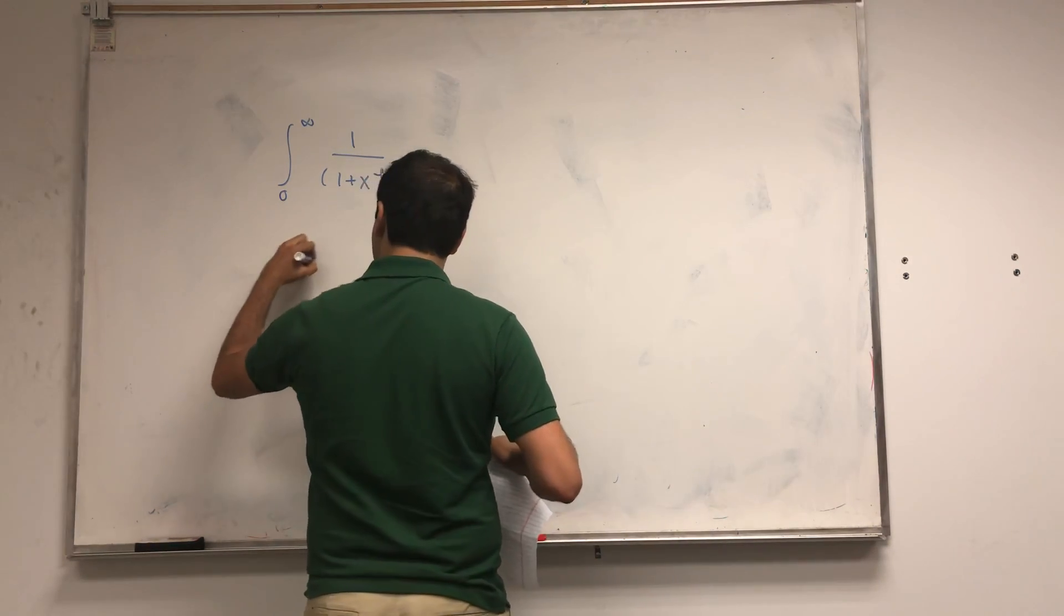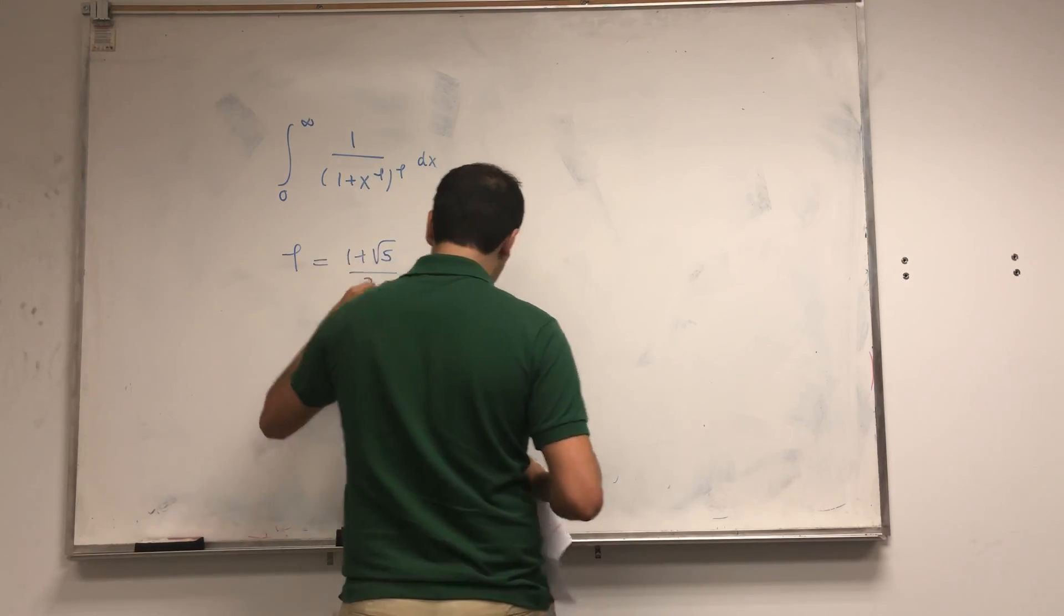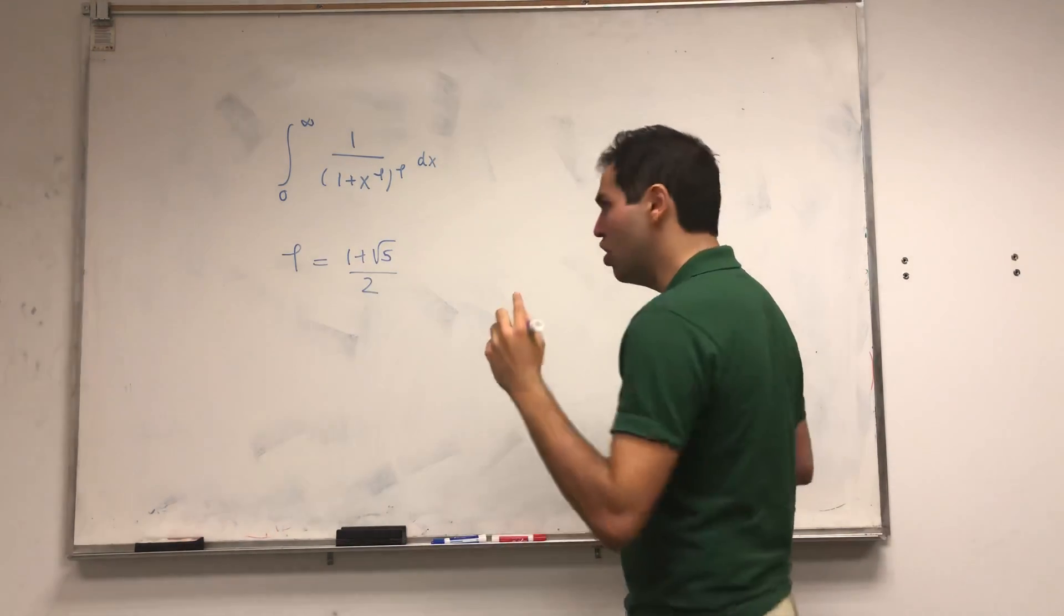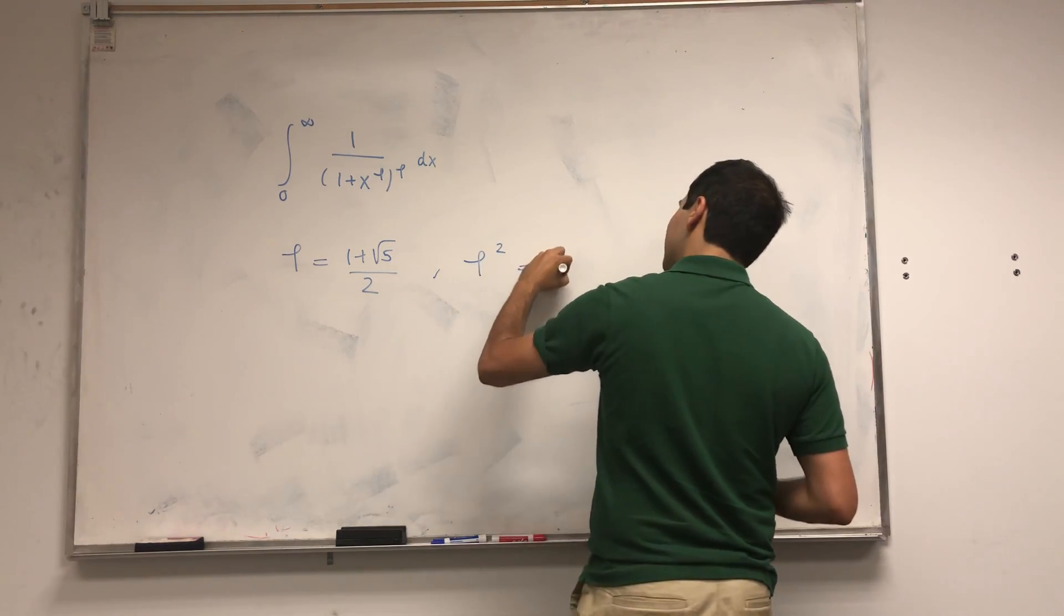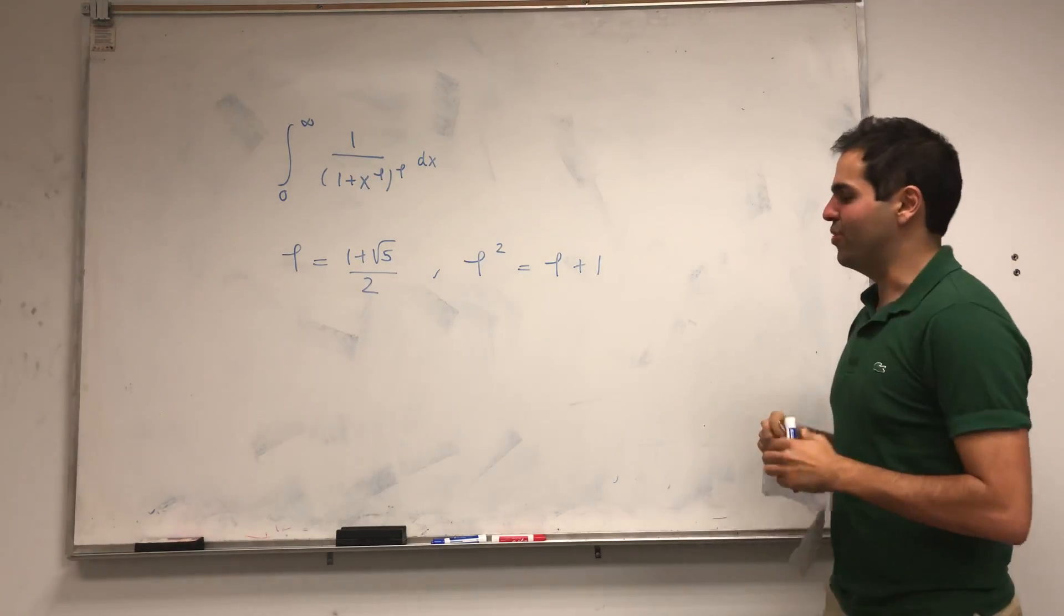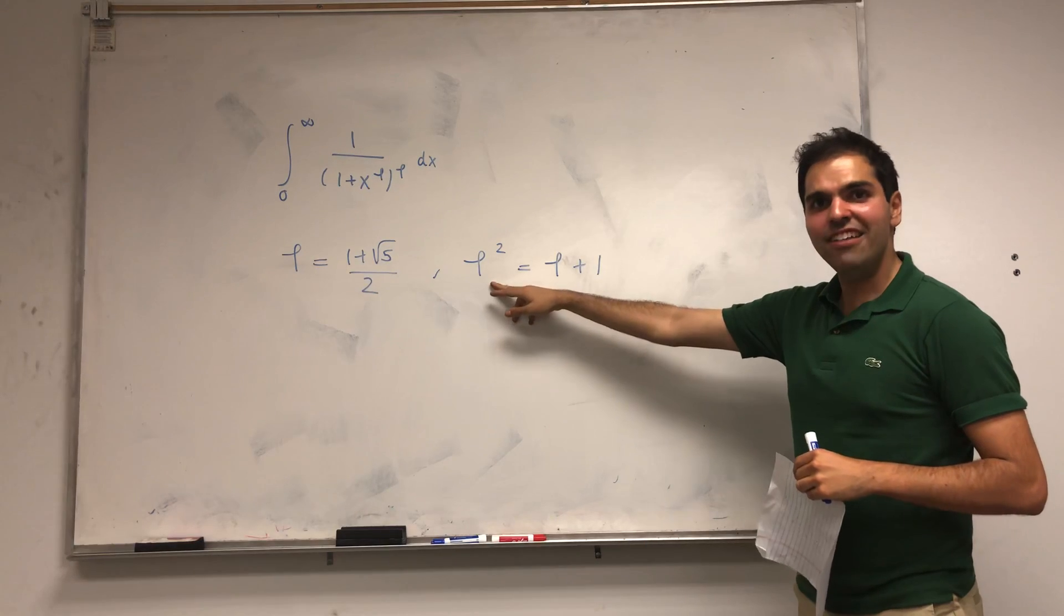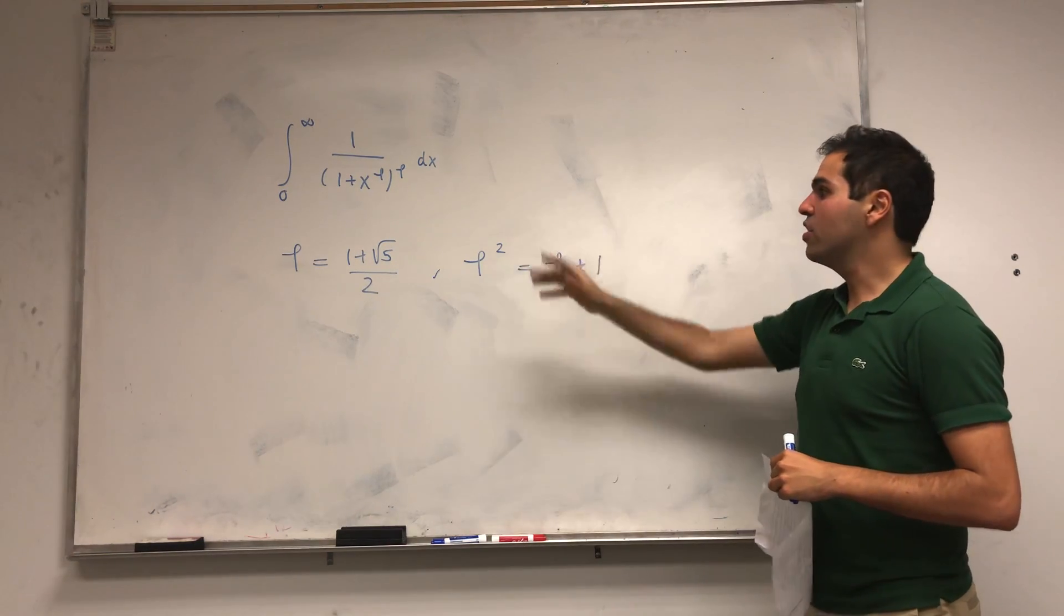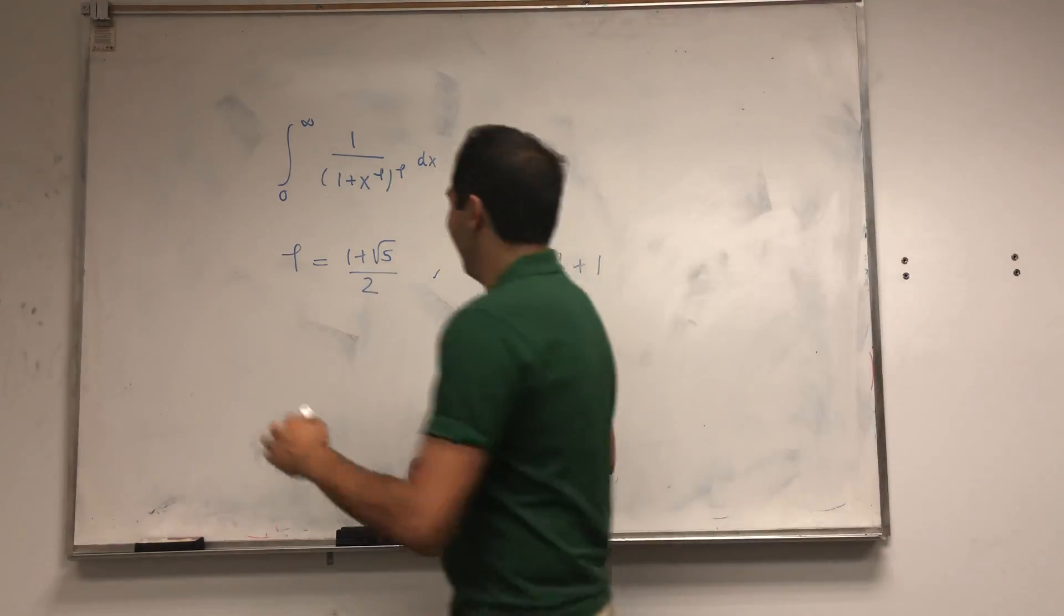So what is the golden ratio? It's just phi equals 1 plus square root of 5 over 2. The only thing you need to know today about the golden ratio is that it satisfies the equation phi squared equals phi plus 1. So it's very easy to square the golden ratio—you just add 1 to it.